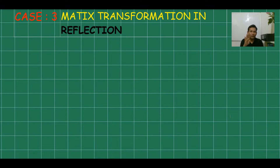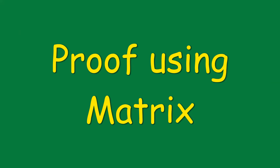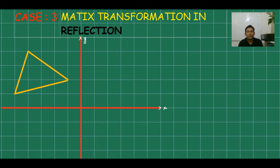There are only four matrices in reflection. I have just one question here — given the axes and object triangle A, B and C, how can we work with matrix transformation in reflection?